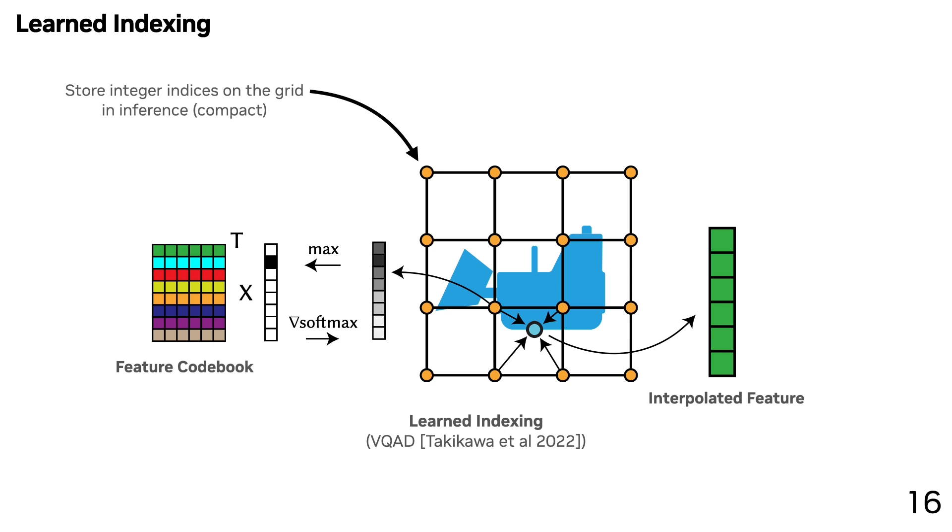A parallel approach that emerges with hash grids is index learning. Here, instead of hashing the coordinates, integers are stored on each corner of a grid. Then index learning is able to learn these integers by using softmax vectors at training time and using a technique known as straight-through estimation to learn this in a differentiable manner. Although this lets you get away with a smaller codebook, this approach is prohibitively expensive for large codebooks due to having to store floating-point values for every single possible index value, and does not scale for larger scenes and larger codebooks.